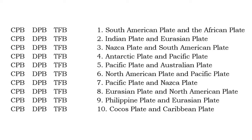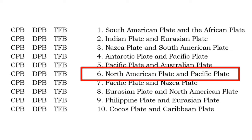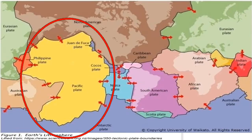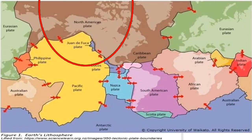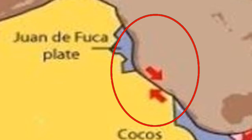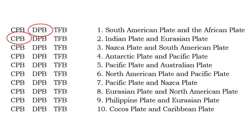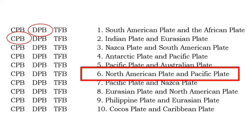Let's try number 6. What's the plate boundary between the North American plate and the Pacific plate? The Pacific plate is in color yellow, while the North American plate is in color brown. Do you see these two arrows? They tend to slide past each other. This shows a transform fault boundary. So, the answer in number 6 is TFB.